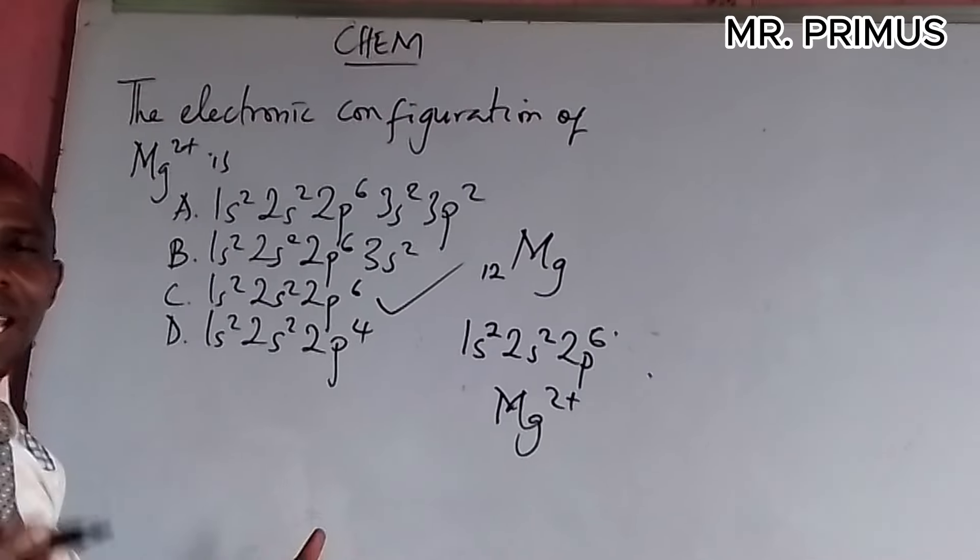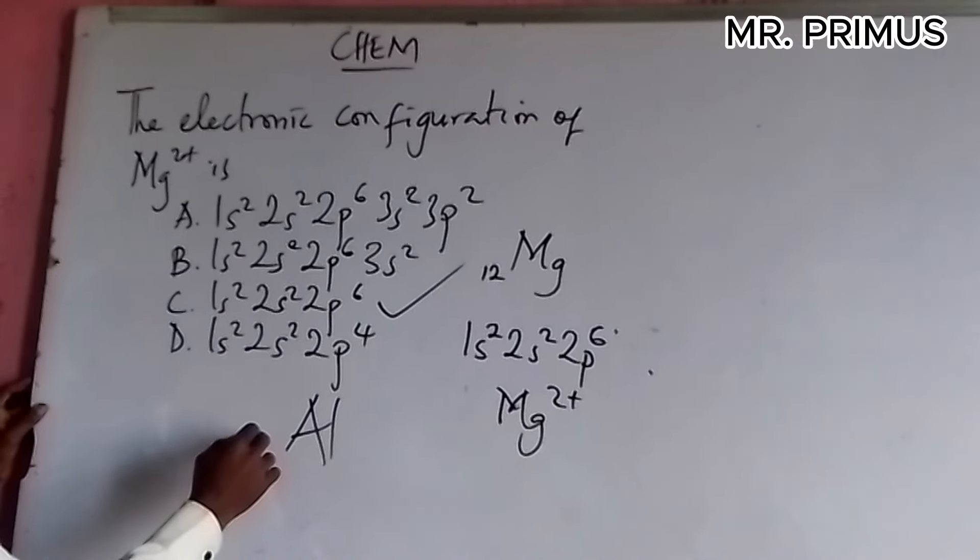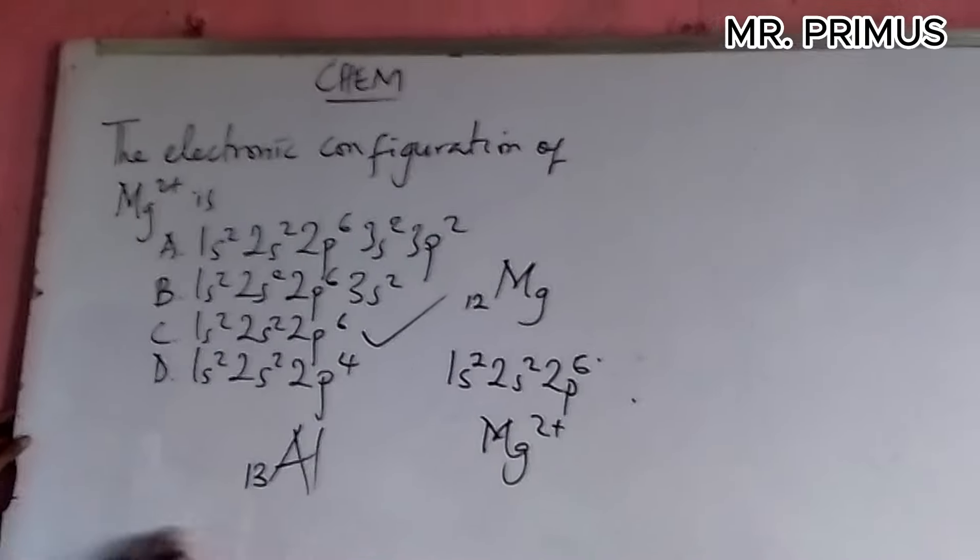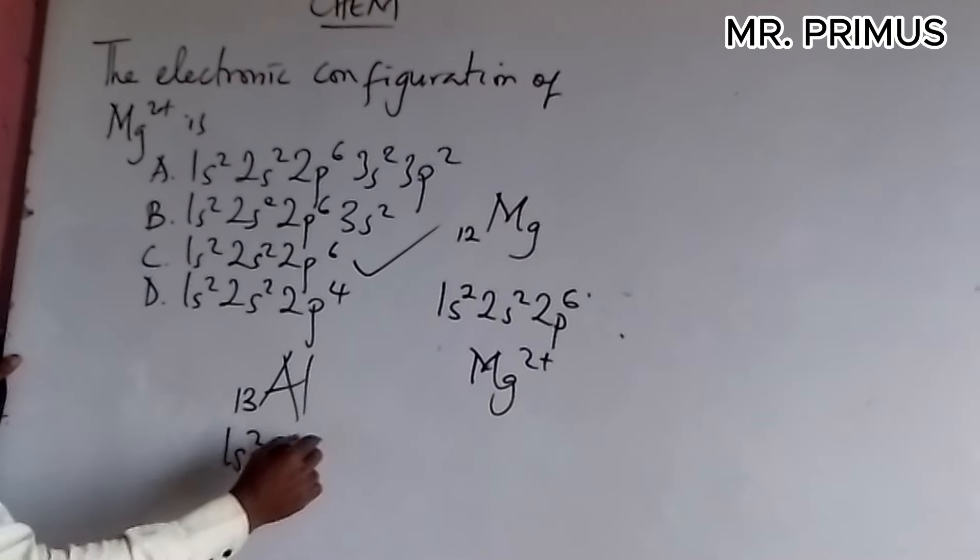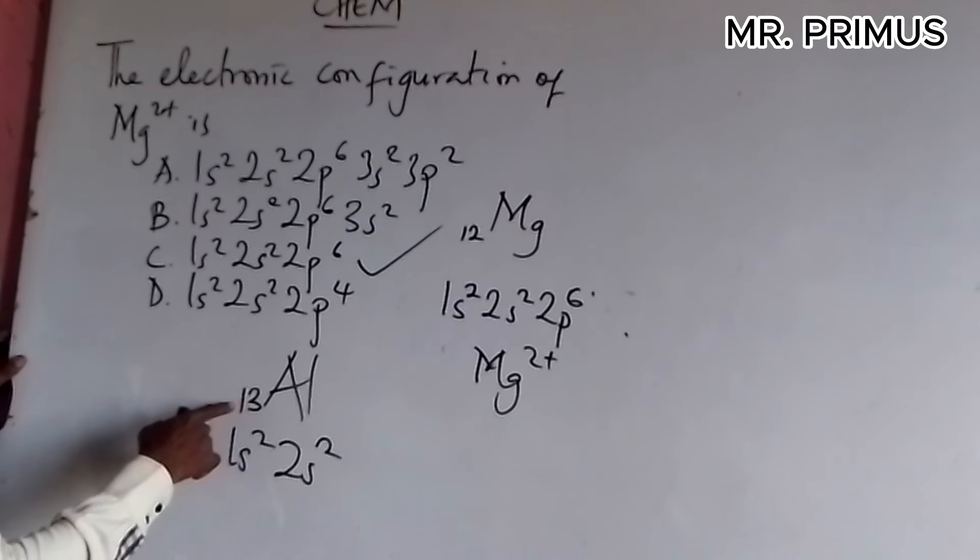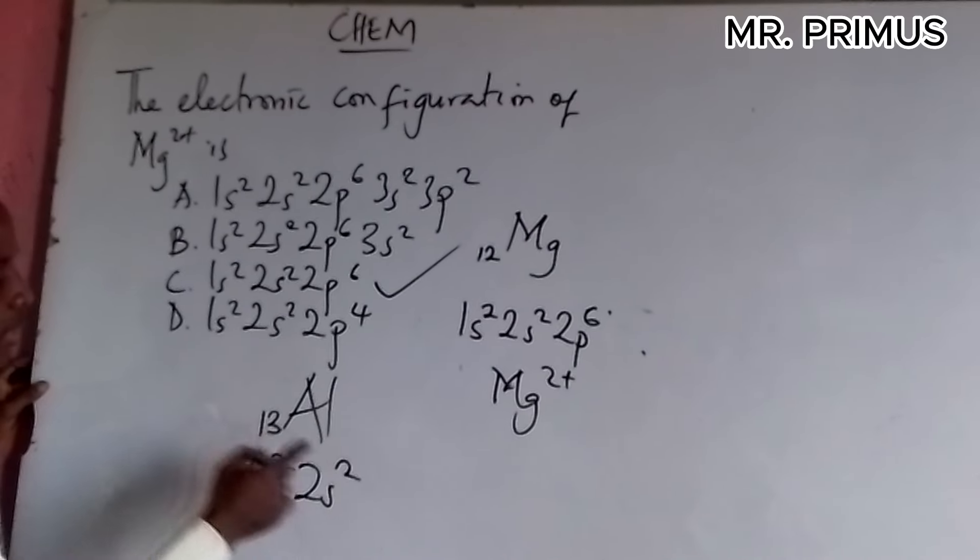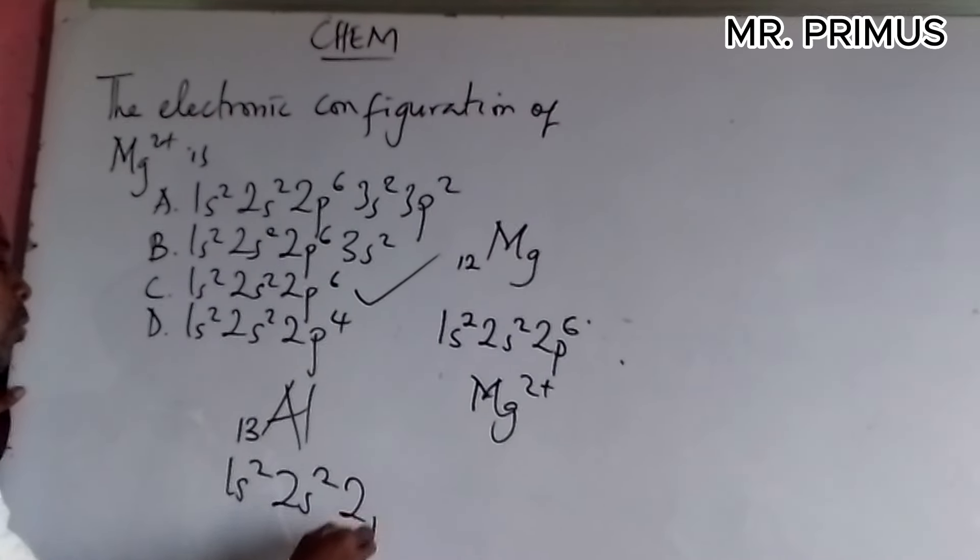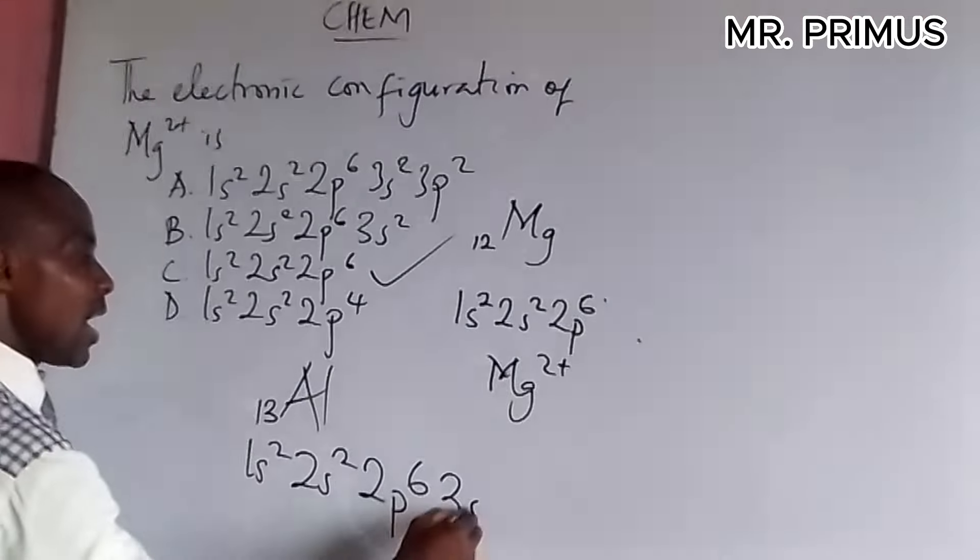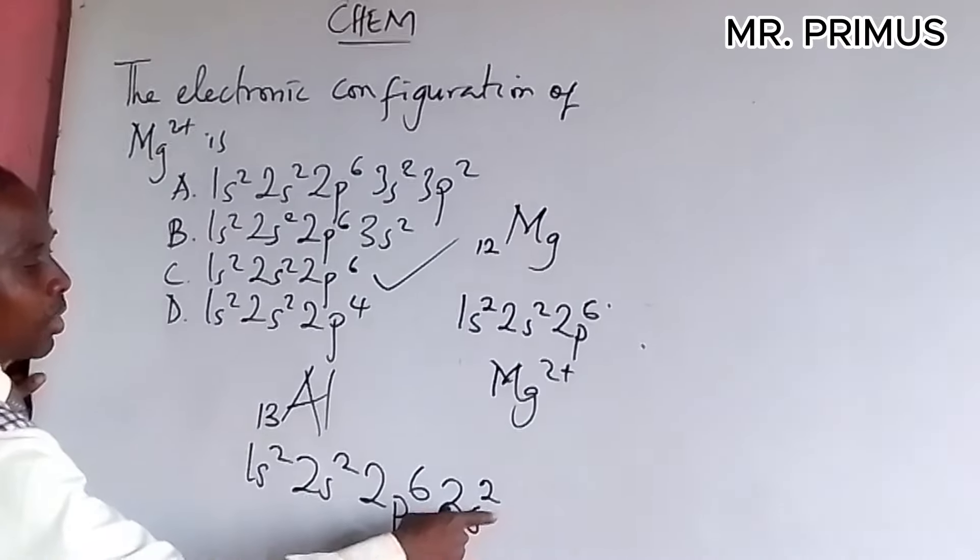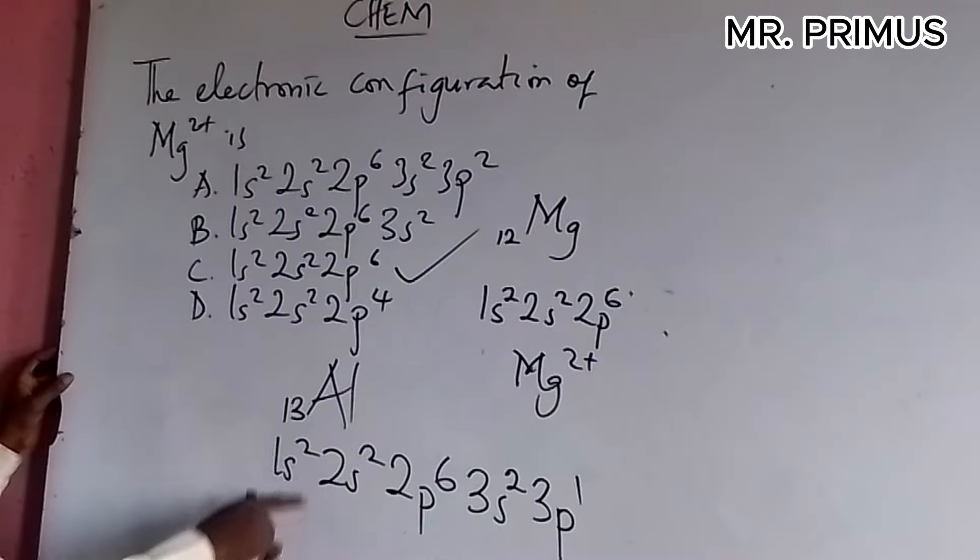So, should you be given an element like aluminum? Aluminum, like this. That is 13 normally. You configure it, electronic configuration: 1s2, 2s2, 2p6. That is 10. Remaining 3. So, we have 3s2. This one can not carry more than 2. Then what? 3p1. 3p1. So, 2 plus 2 is 4, plus 6 is 10, plus 2 is 12, plus 1 is 13.